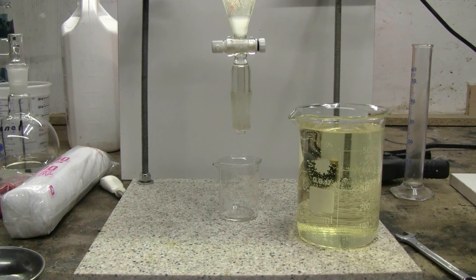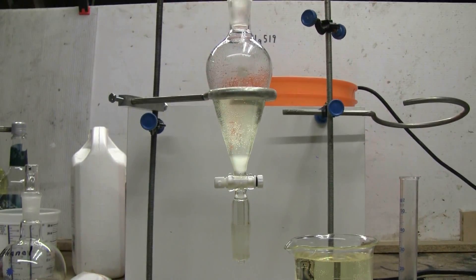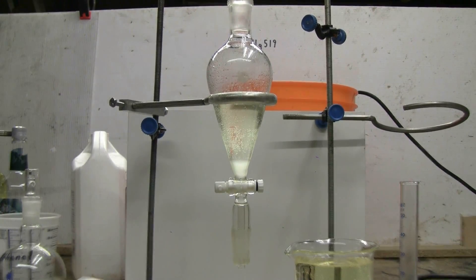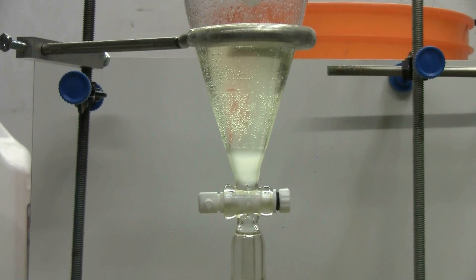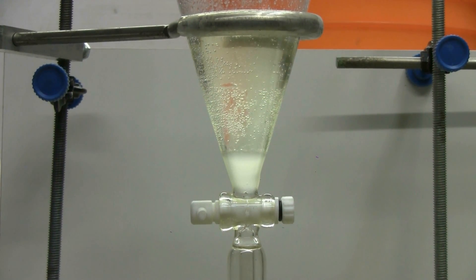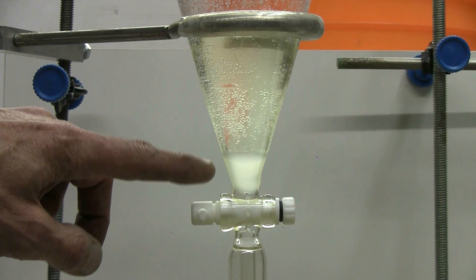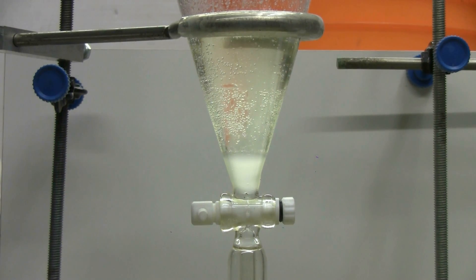I've set up a sep funnel with a small beaker under it and we can see that the balance of the product is in the sep funnel where two layers are forming. Our chloroform will be at the bottom and we'll be able to just drain it off into the little beaker when it finishes separating.